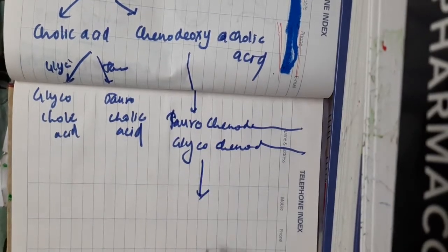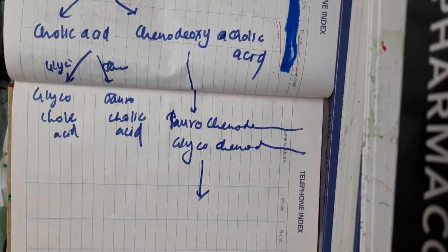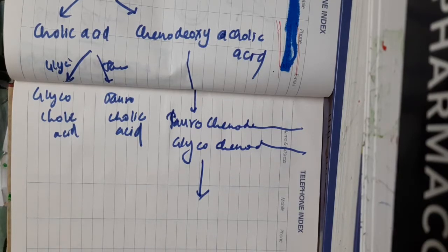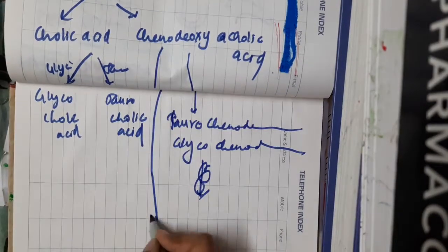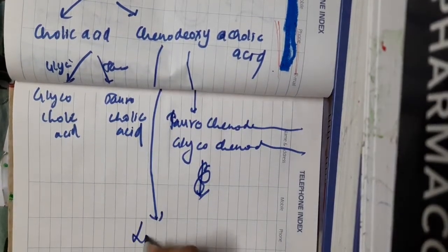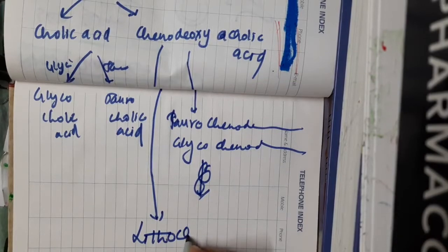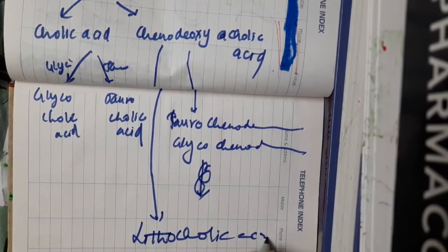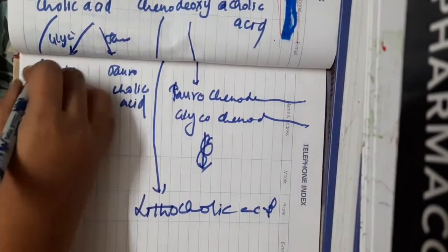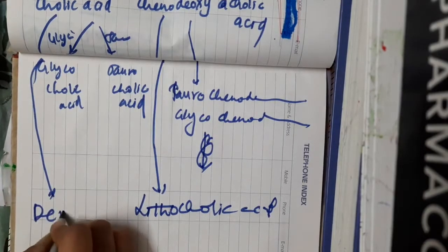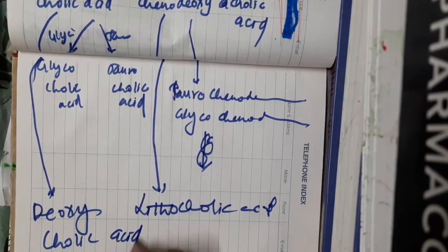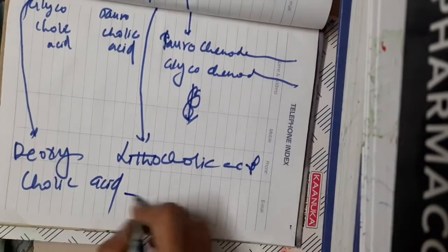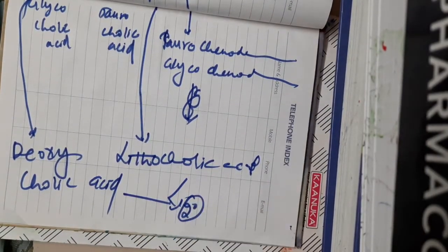Chenodeoxycholic acid in the presence of intestinal bacteria forms lithocholic acid. Similarly, cholic acid in the presence of intestinal bacteria forms deoxycholic acid. Both lithocholic acid and deoxycholic acid are the secondary bile acids.